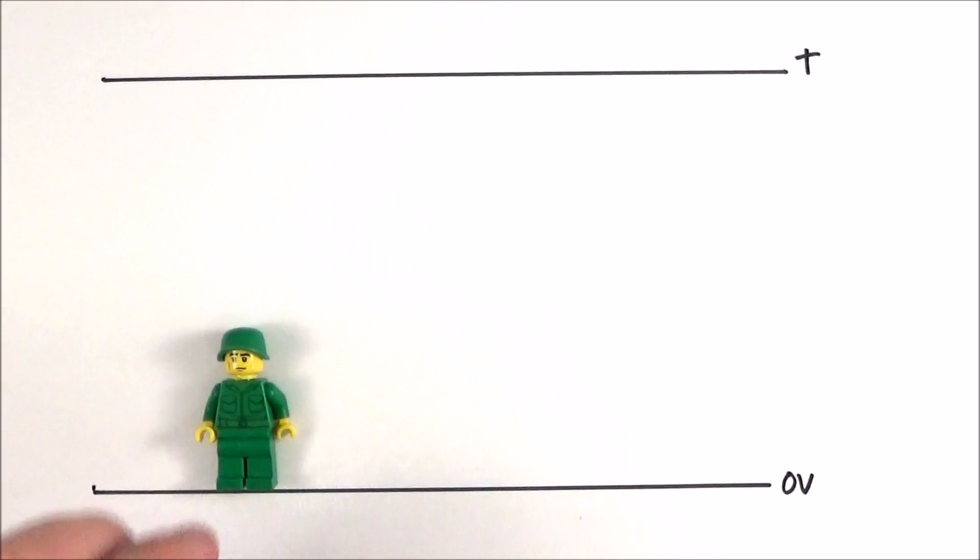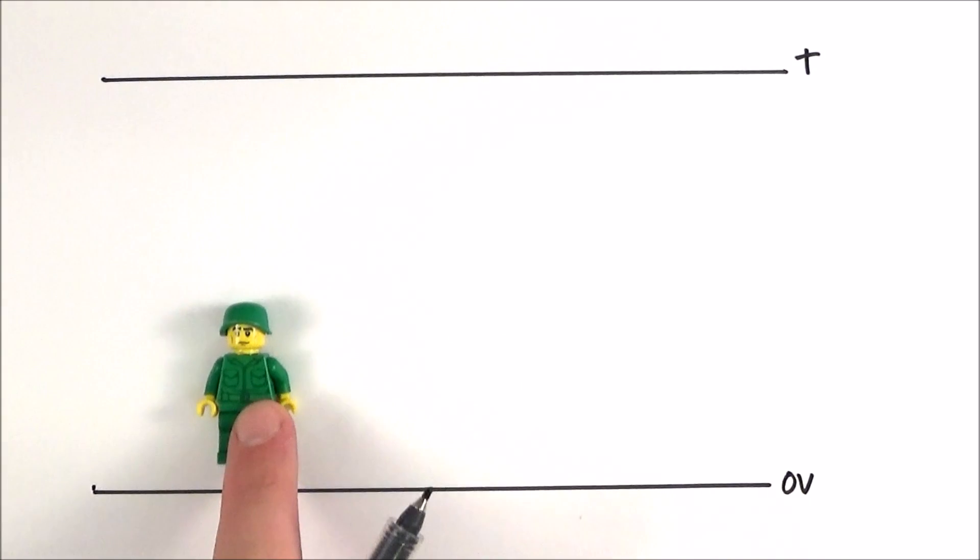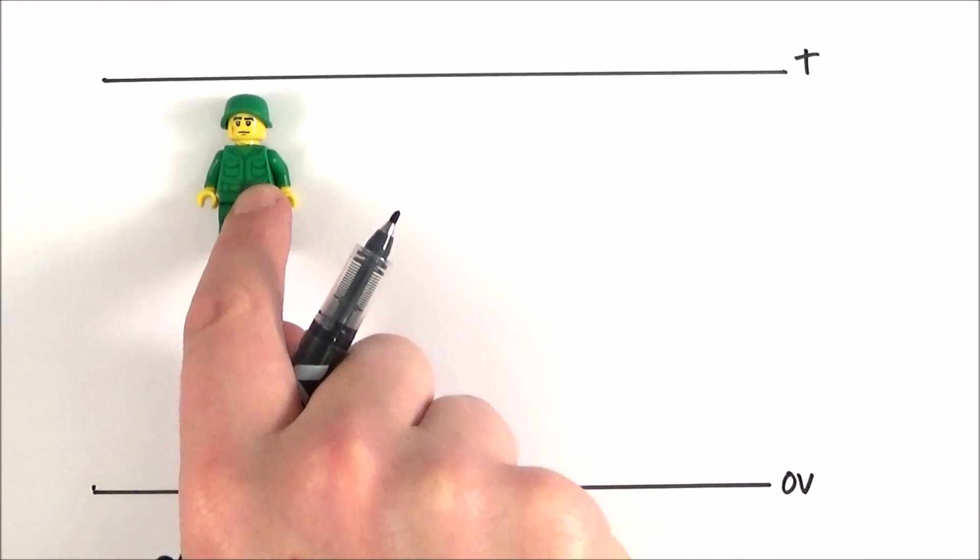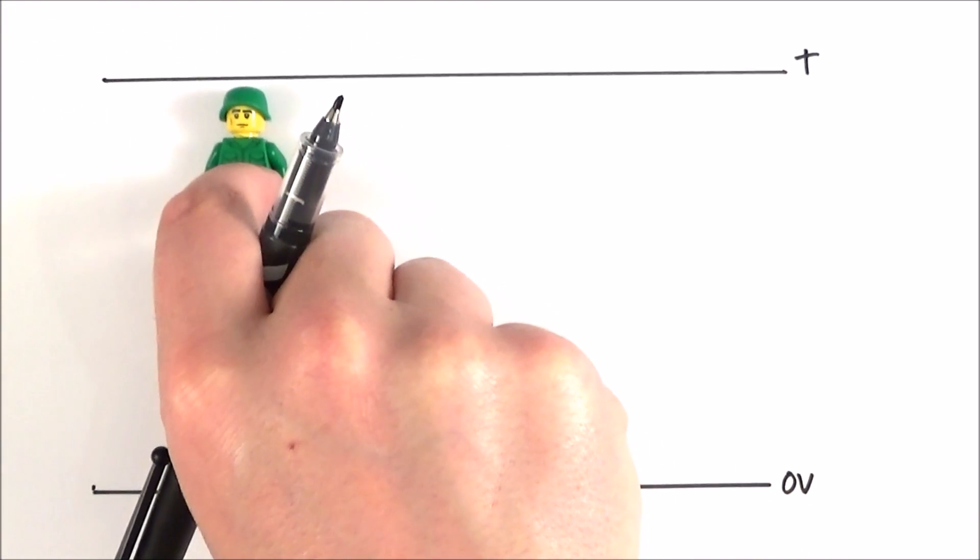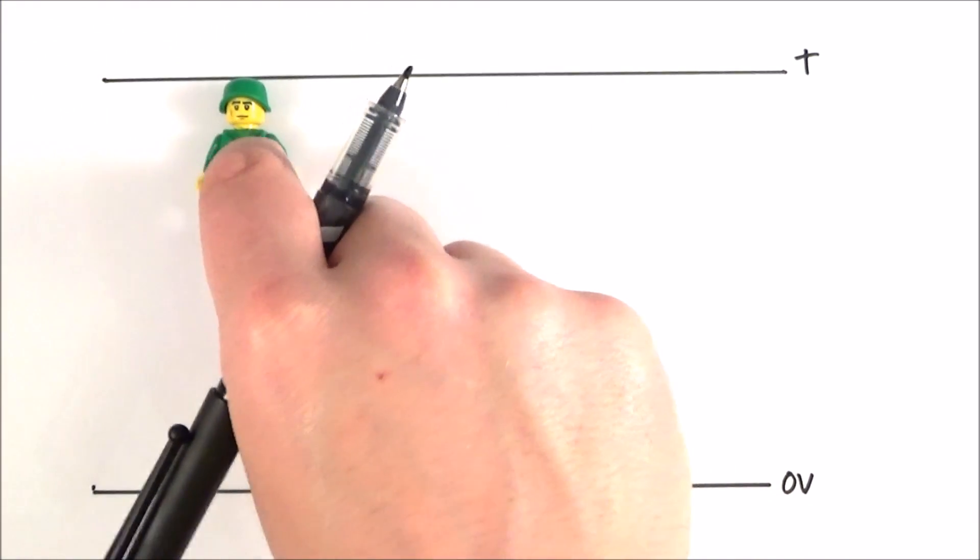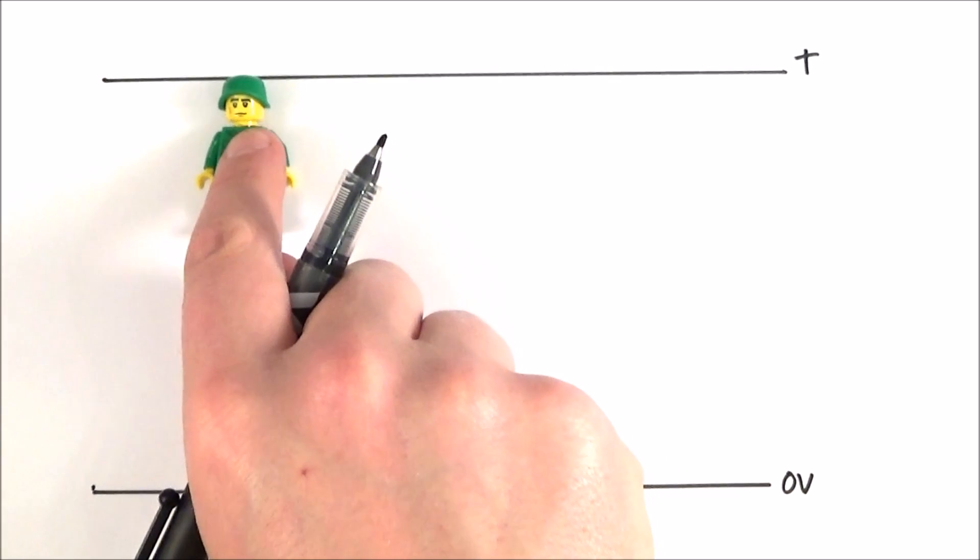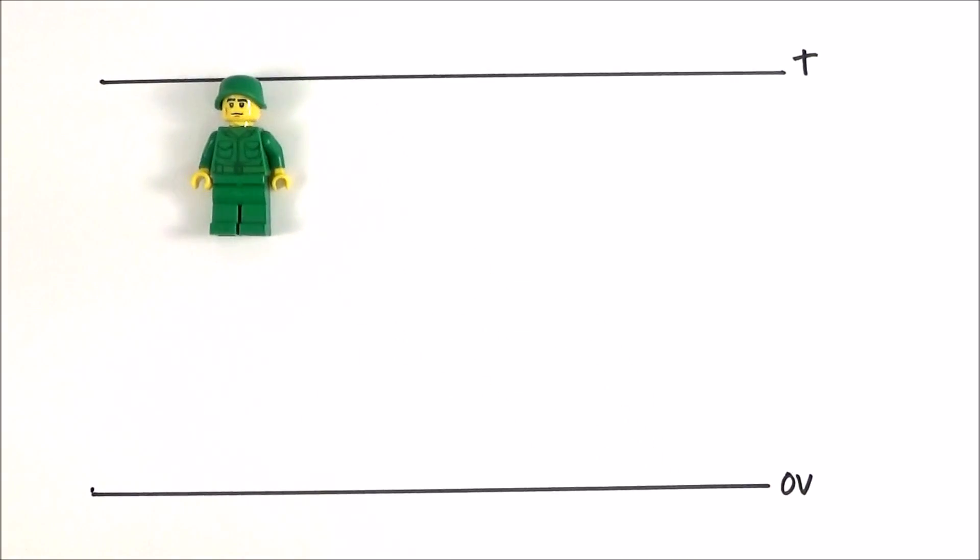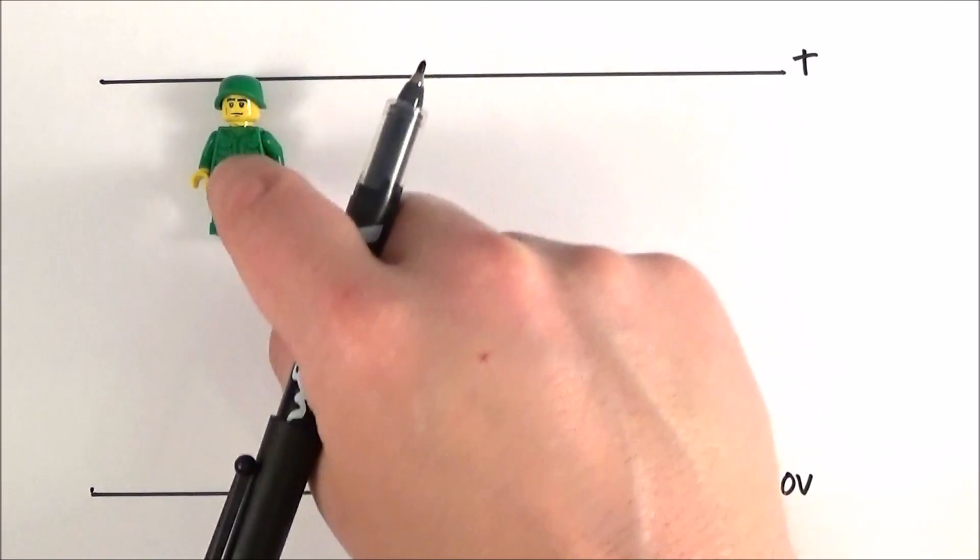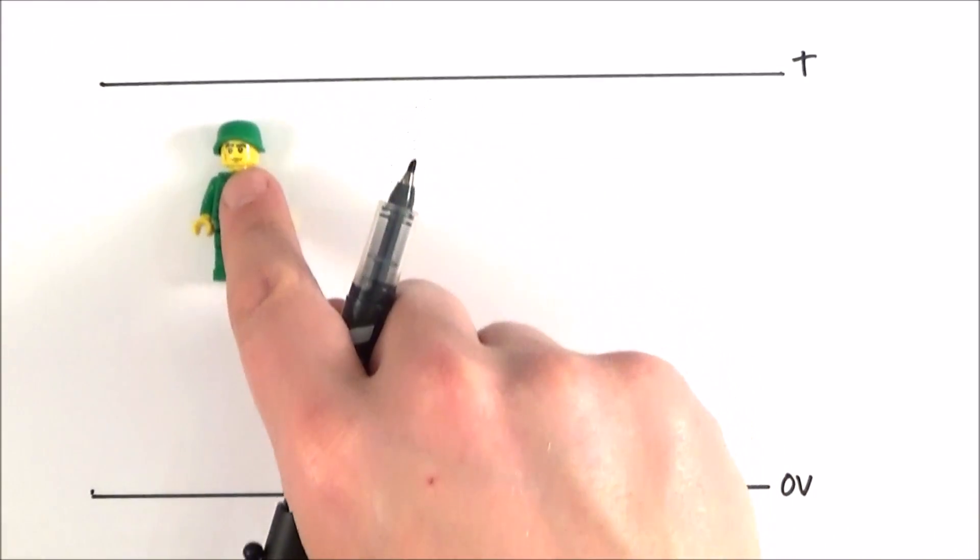So what happens when we have our unit charge, we do some work on it, and we move it through a potential difference? If we think of this as a positive charge, when it gets to the positive plate after doing work on it, as soon as I let it go, it's going to be like a stone falling in a gravitational field. This thing is going to be repelled and move down towards the other plate.